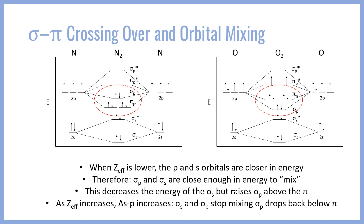So in nitrogen, which has a lower nuclear charge, we're going to have more mixing and therefore a higher energy sigma p, which is going to be above the pi orbitals. However, in oxygen with a greater effective nuclear charge, the s and p orbitals start to break apart and we have less mixing, meaning that the sigma p will be lower in energy and drop below the pi orbitals. So it's not actually the pi orbitals that are flip-flopping — it's the sigma p orbitals which are moving back and forth depending on how much they are mixing with the sigma s orbitals. It's a really interesting phenomenon.